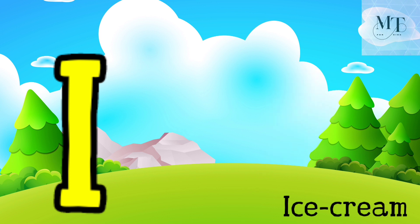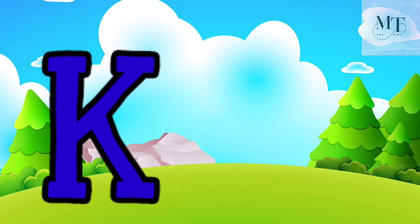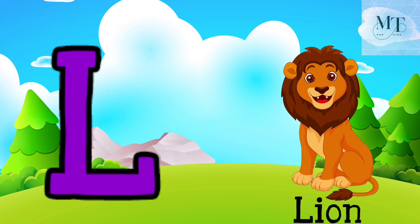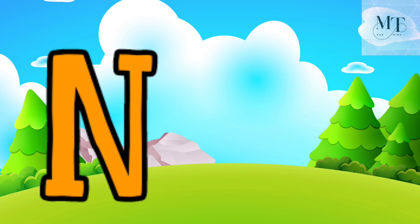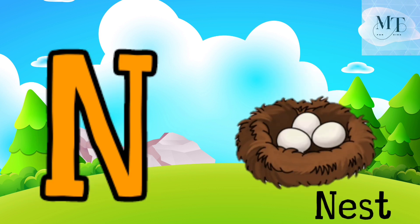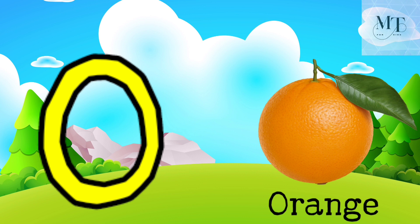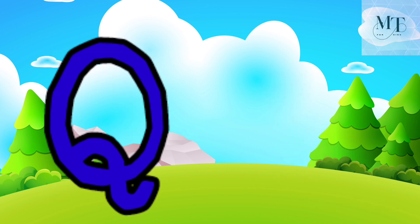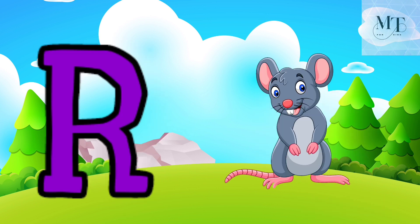J, K, L, M, N, O, P, Q, R. J for jellyfish, K for king, L for lion, M for monkey, N for nest, O for orange, P for parrot, Q for queen, R for red.